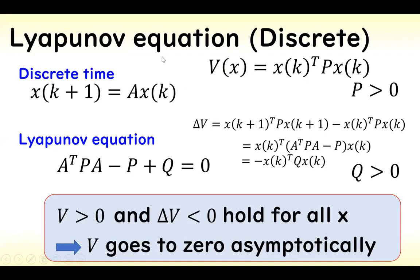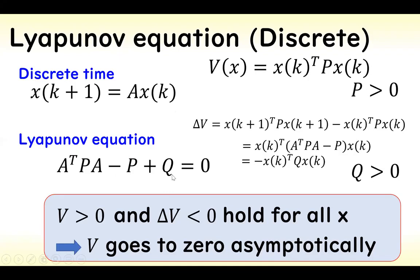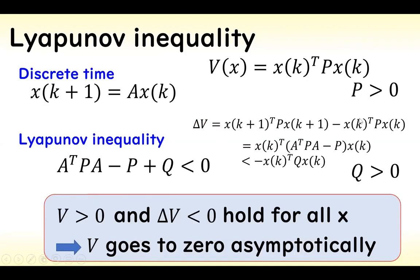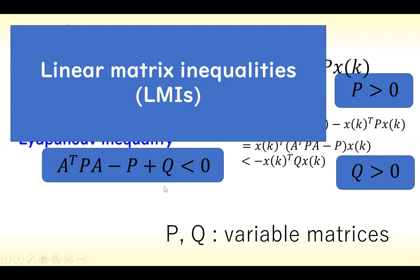In the case of the discrete-time system, the Lyapunov equation is given like this, and P and Q should be positive matrices. When these equations hold for all X, V goes to 0 asymptotically by these equations and inequalities. In the case of the Lyapunov inequality, V also goes to 0 asymptotically by three inequalities. We solve for P and Q as the variable matrices, and when we obtain positive matrices P and Q, the system is stable.